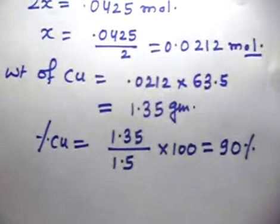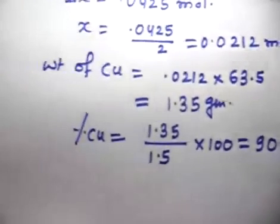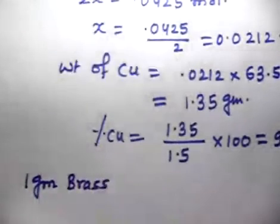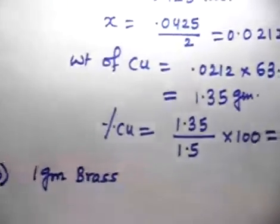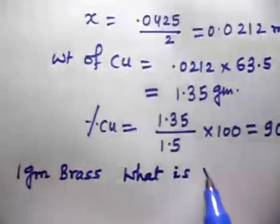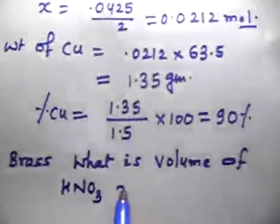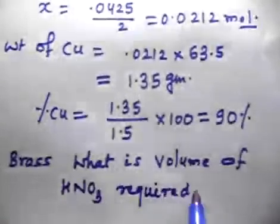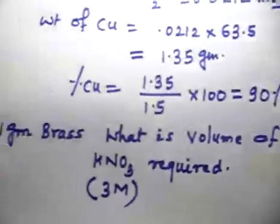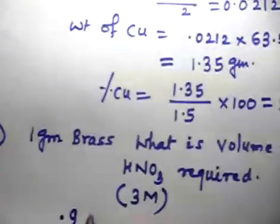Part B: How many milliliters of 3M HNO3 are required to completely react with 1 gram of brass? Since brass is 90% copper, 1 gram of brass contains 0.9 grams of copper and 0.1 grams of zinc.